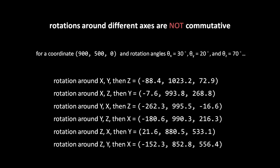For example, when I rotate in the order x, then y, then z, the point ends up at negative 88.4, 1023.2, 72.9, but when I rotate in the order x, then z, then y, the point ends up at negative 6.7, 993.8, 268.8.